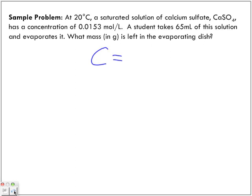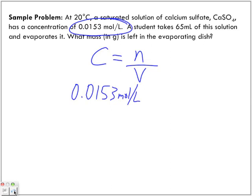All right, so molar concentration is equal to number of moles over volume. So 0.0153 moles per liter is which one of those letters? The C, right?